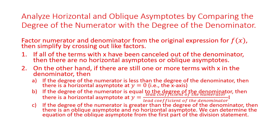On the other hand, if there are still one or more terms with x in the denominator: if the degree of the numerator is less than the degree of the denominator, there's a horizontal asymptote at y equals zero. If the degrees are equal, there's a horizontal asymptote at y equals the lead coefficient of the numerator over the lead coefficient of the denominator. If the degree of the numerator is greater, there will be an oblique asymptote and no horizontal asymptote — determined from the first part of the division statement.